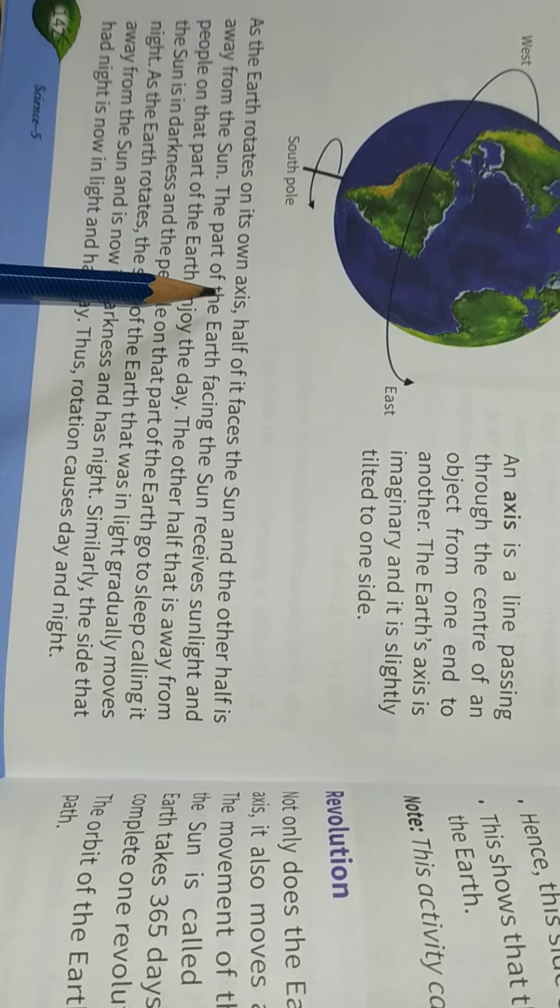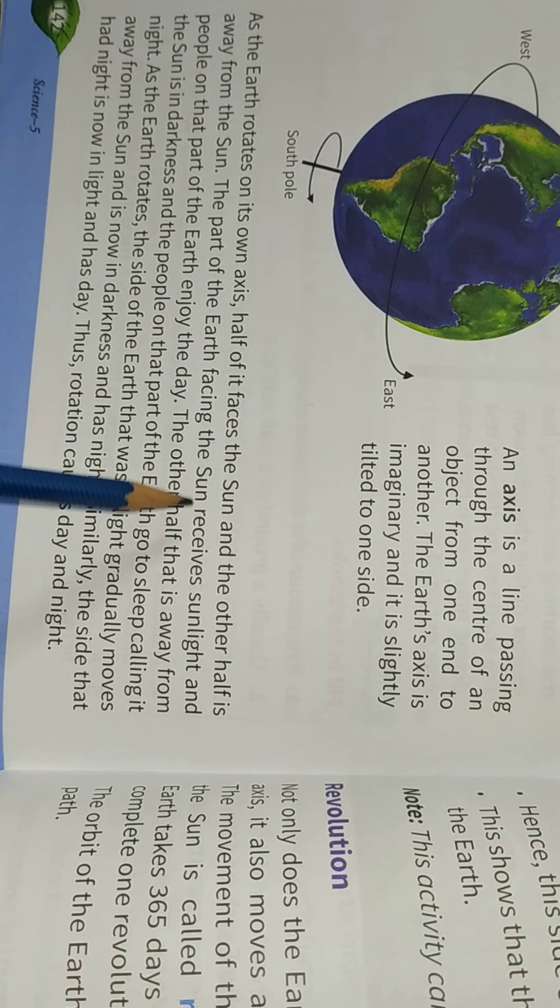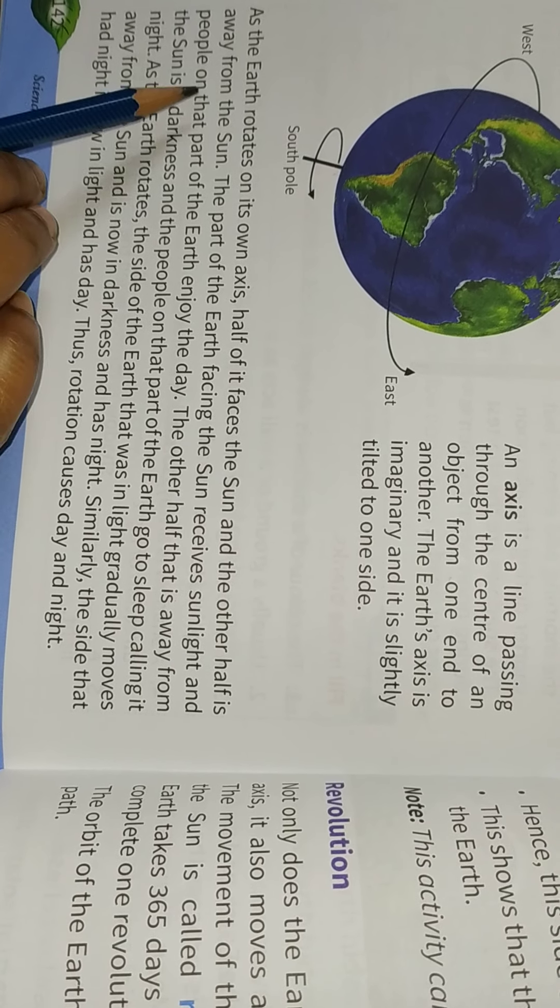As the Earth rotates on its own axis, half of it faces the sun and another half is away from the sun.